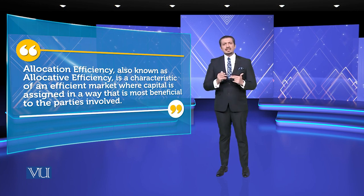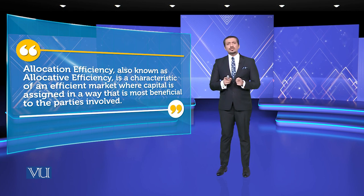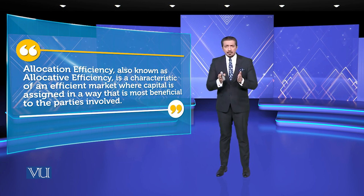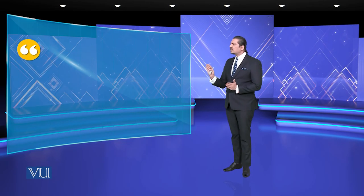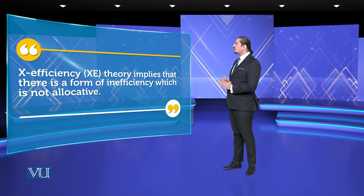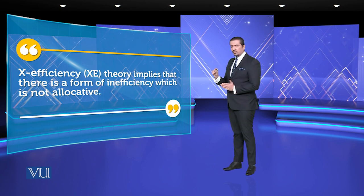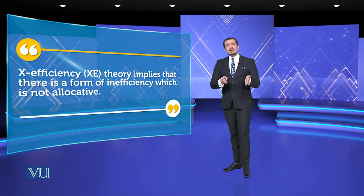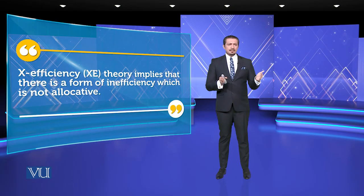Maximize اور optimum کی بحث بھی ساتھ رکھنی ہوگی تب سمجھ آئے گا کہ X-efficiency اور allocative efficiency میں کیا فرق ہے۔ X-efficiency theory implies کہ ایک ایسی inefficiency موجود ہے جو allocative نہیں ہے۔ مثلاً اگر میں نے outsource کرنا ہو اور سات دن میں result دینا ہو تو میرا کام پانچ دن میں مکمل ہونا چاہیے — یعنی non-allocative inefficiency کا یہ practical مفہوم ہے۔